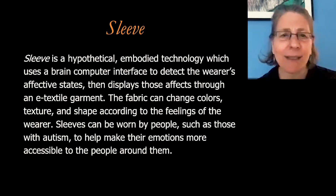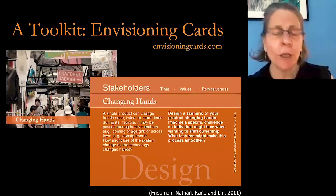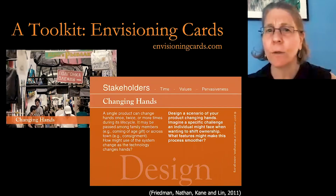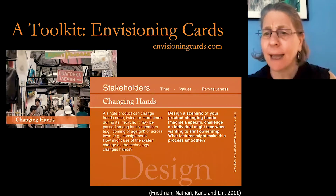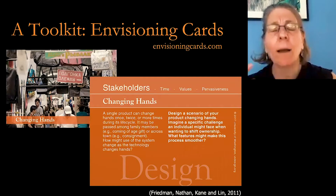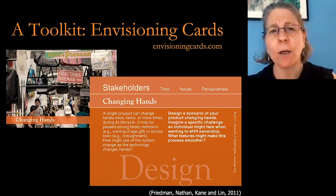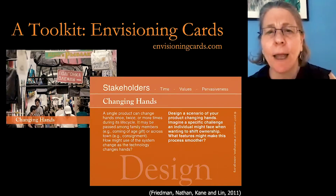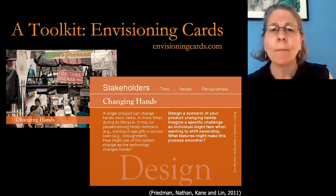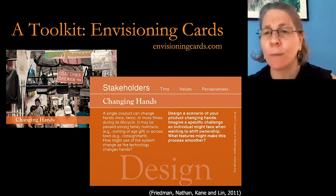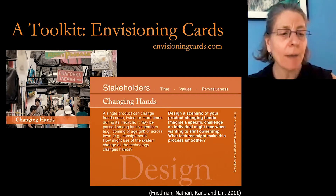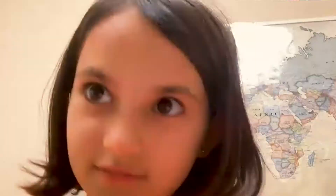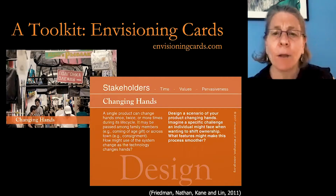Now that we all understand Sleeve, we're going to do our design work with it. We'll be using a toolkit called the Envisioning Cards, which help us think outside the box. This is a stakeholder card called 'Changing Hands.' The idea is that a single product can change hands once, twice, or more times during its lifecycle — meaning we can give it away or pass it to someone else to use.